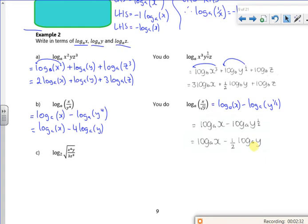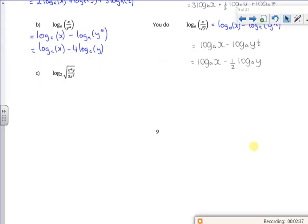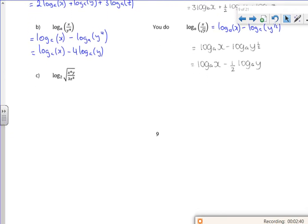I like c. C's nice. There's no one piece. So anything on the top is a plus. Anything on the bottom is a minus. So on top is a plus. On bottom is a minus. So I've got log to base 2 of x to the 4. I've got log to base 2 of y. Now those ones on the top so they get pluses.